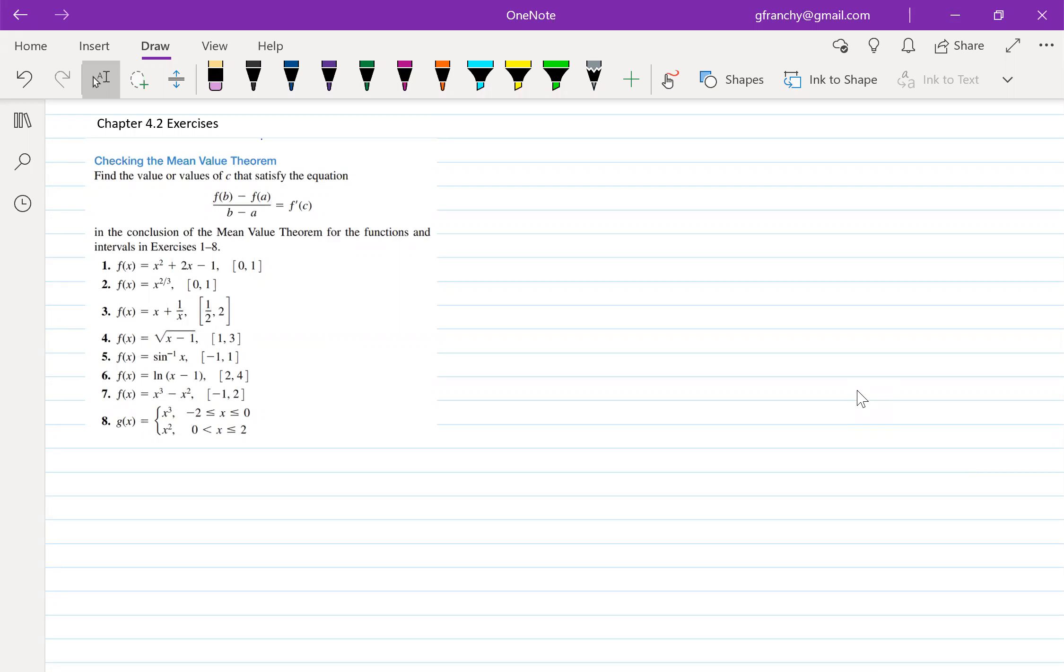We're going to take a look at exercise six out of chapter four, section two, and they want us to find the values of C that satisfy the mean value theorem on our interval.